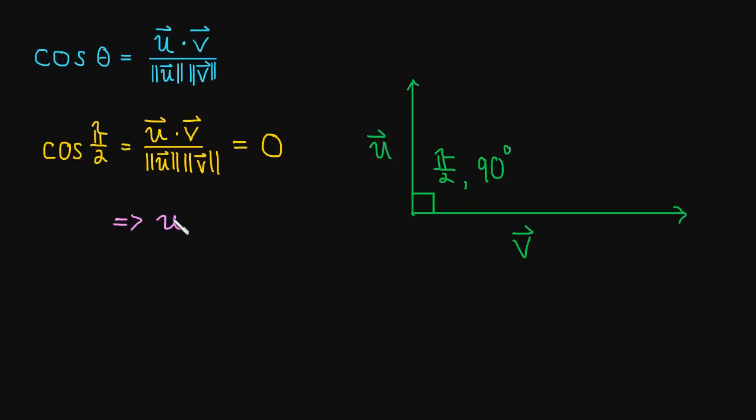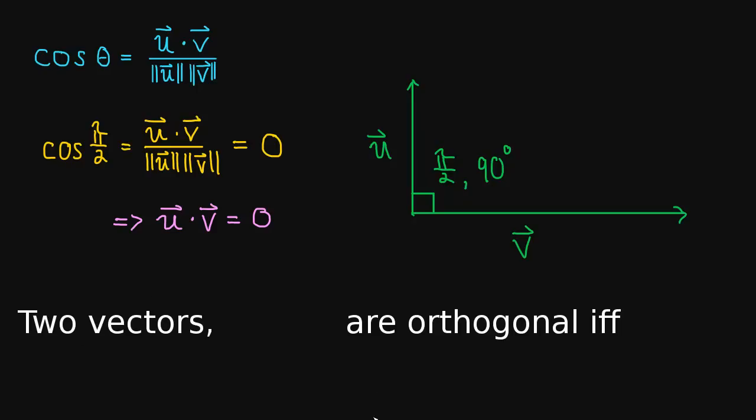Well, that tells us that u dot v must be equal to 0. So this implies that u dot v is equal to 0. And that's because the denominator here will never make this fraction 0. So if the vectors are orthogonal, then the dot product is 0. And in fact, that works in the other direction. If the dot product is 0, the vectors are orthogonal.